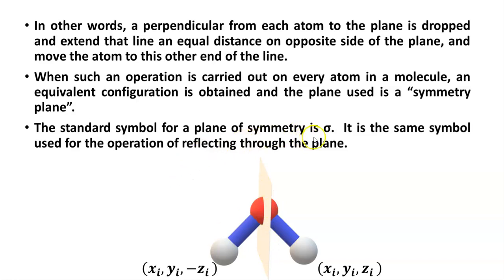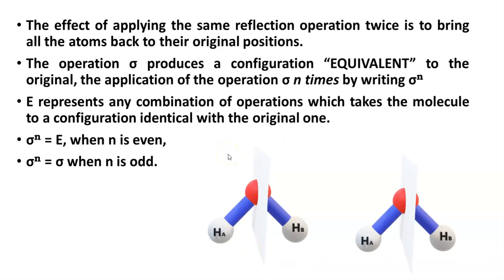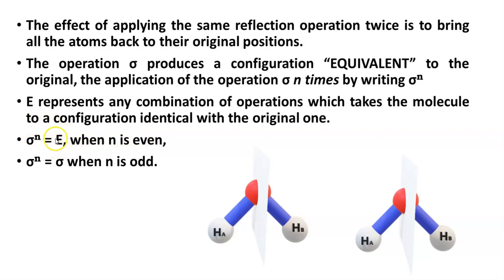The symmetric plane is often denoted by sigma (σ), and continuous application of reflection about this plane is denoted by sigma to the power n (σⁿ). If done twice, it is written as σ². Performing the reflection once gives an equivalent configuration. Performing it twice returns the molecule to its original shape. So when the reflection is carried out an even number of times (n even), you get the identical configuration; when n is odd, you get an equivalent configuration.